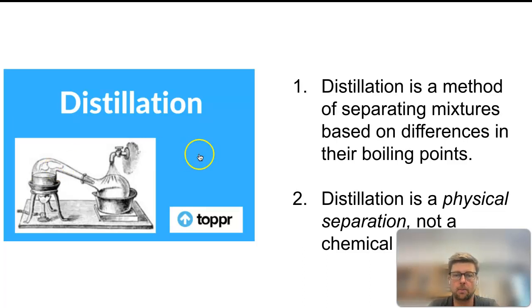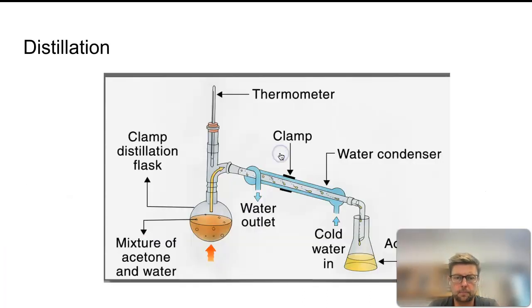Whichever is the lower boiling point liquid is going to boil first. So if we have our heat source down here below the distillation flask, a lot of times we'll have water down here or a heating mantle in order to get this mixture of two liquids to its first boiling point.